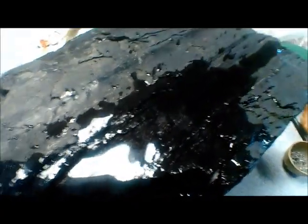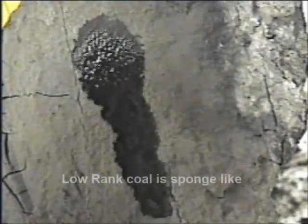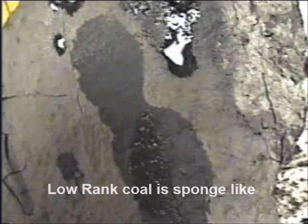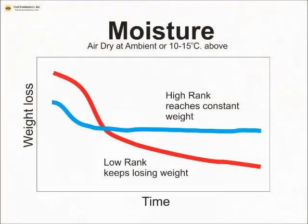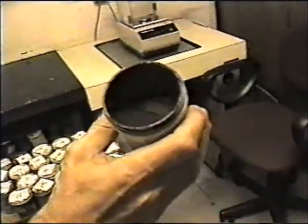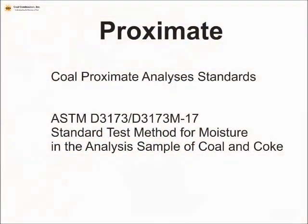If the coal is a low-rank coal — sub-bituminous or lignite — we might get a more sponge-like reaction with surface moisture. This makes it hard to interpret the separation between surface moisture and inside or residual moisture, or the moisture in the bed. In the laboratory during air drying, bituminous coals reach a constant weight, while sub-bituminous coals tend to keep losing weight. Once we dry off the surface moisture, we have to pulverize the coal to make a 60-mesh or 250-micron sample — this is the actual laboratory sample we'll be weighing for moisture, ash, and volatile.